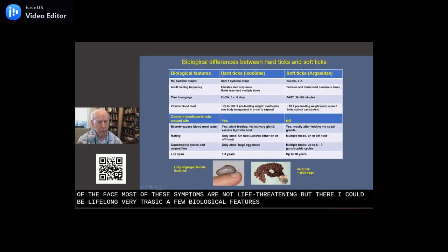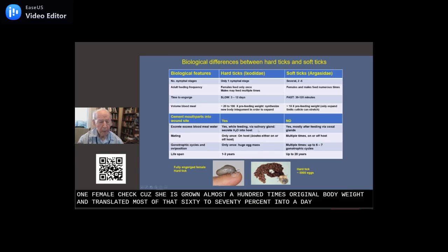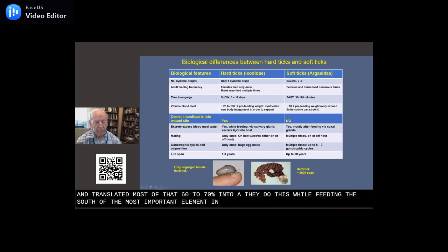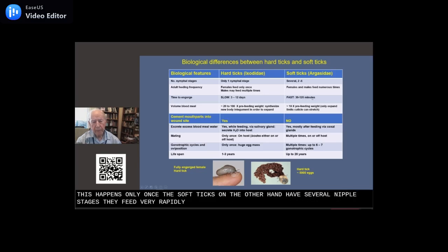A few biological features. The hard ticks have only one nymphal stage, and the females feed only once and lay enormous amounts of eggs. You can see a huge amount of eggs from this one female tick, where she has grown almost a hundred times her original body weight and translated most of that, 60 to 70 percent, into eggs. The soft ticks, on the other hand, have several nymphal stages. They feed very rapidly, they can molt, and they can live for very long periods of time. Each time they feed again, they lay a few hundred eggs, not tens of thousands.